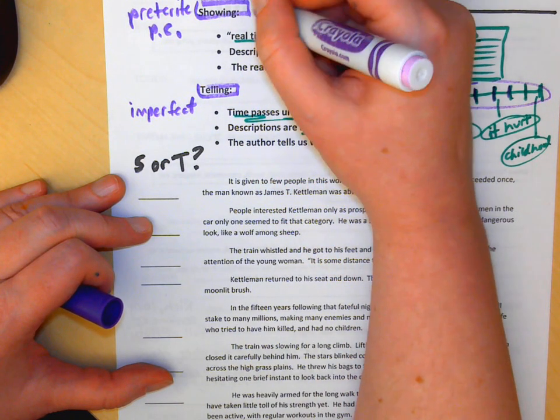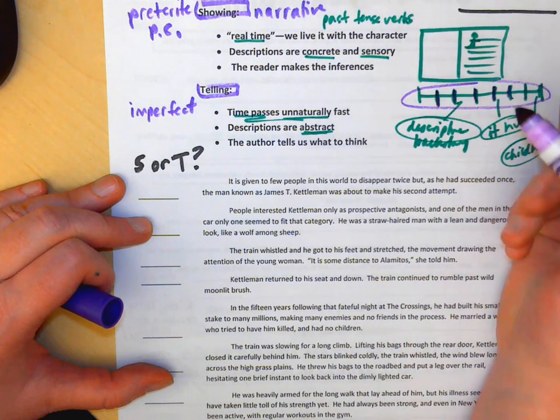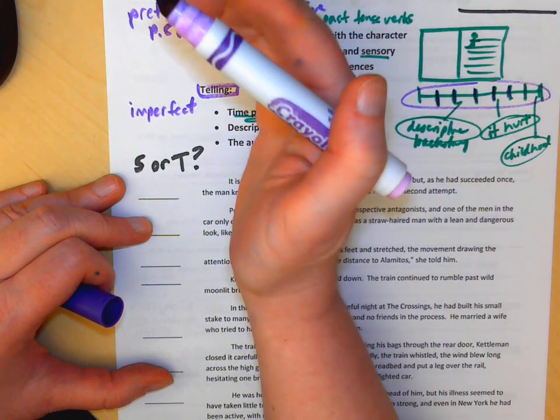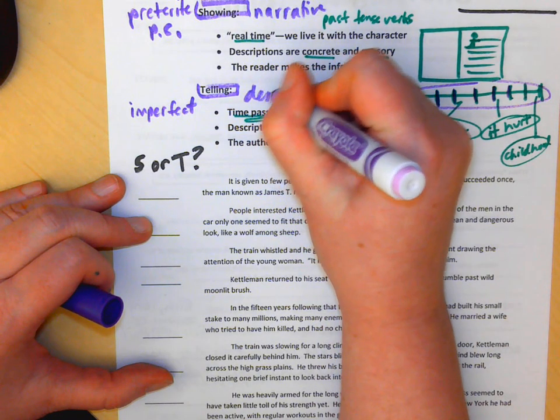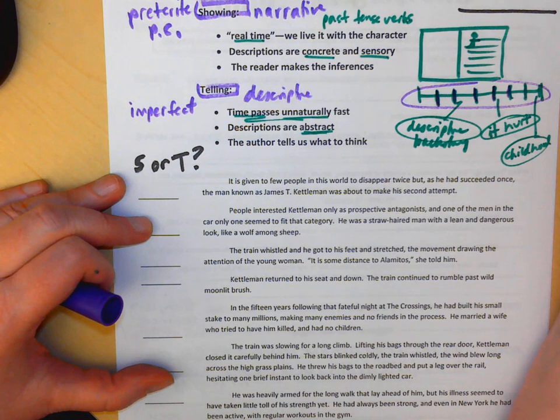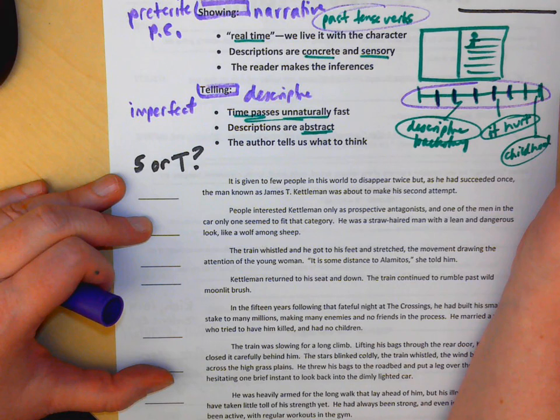You could also say that showing is narrative. Showing is the narrator telling you the story, whereas telling is descriptive. Now, of all those things I just said, one of the big keys to doing this little exercise is, if we're in showing modality, look for past tense verbs. Things that happened in our story.